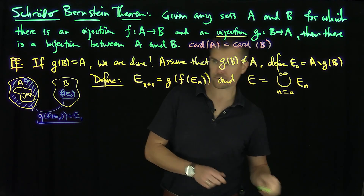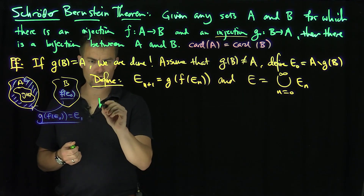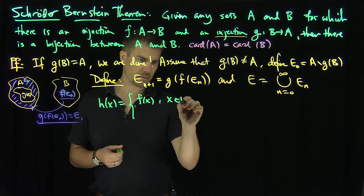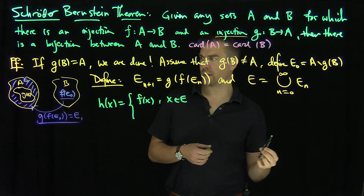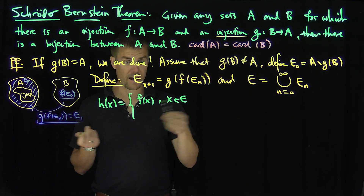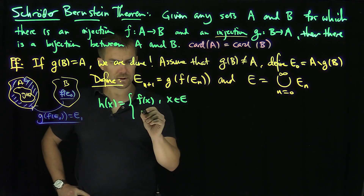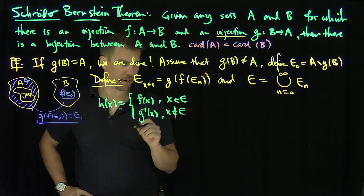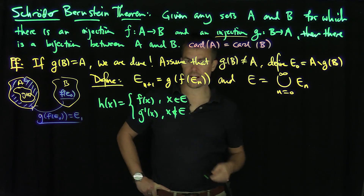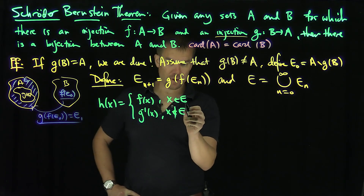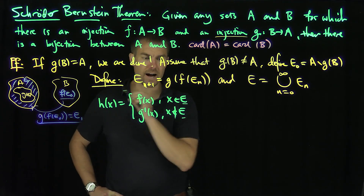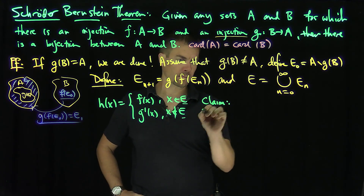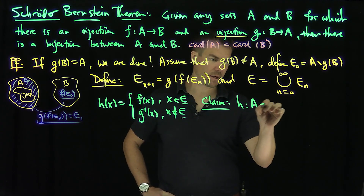The bijection is defined as follows. Define H of X to be F of X if X is in E, and G inverse of X if X is not in E. E resides as a subset of A, so if you're in A, you're either in E or you're not in E — that gives you everything in A. We claim H maps A into B as a bijection.